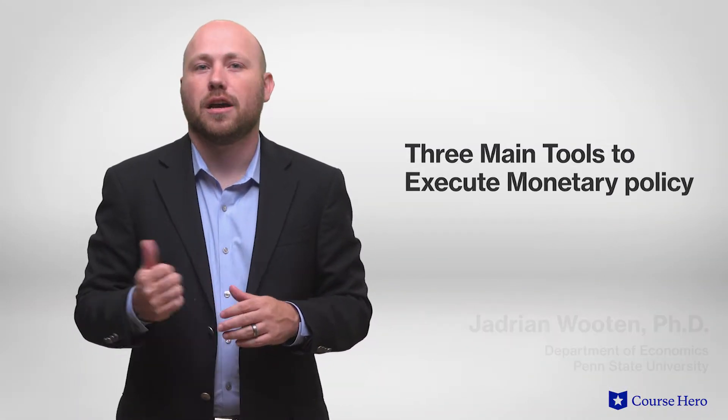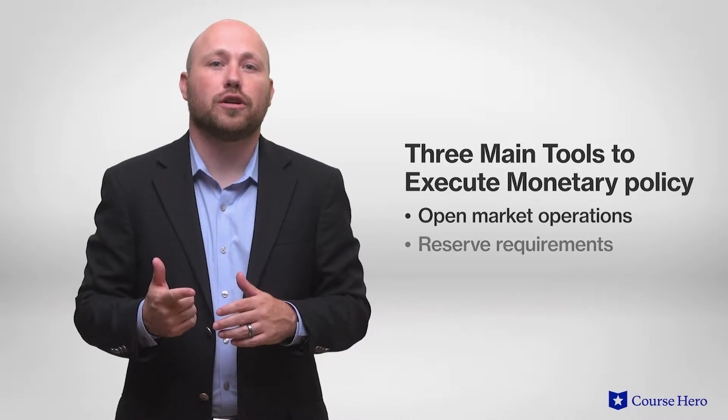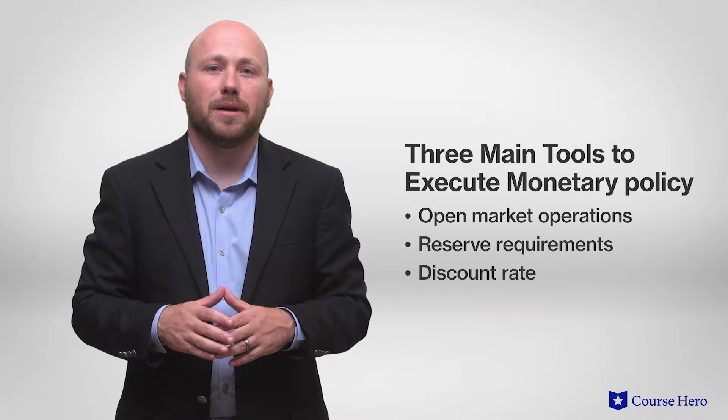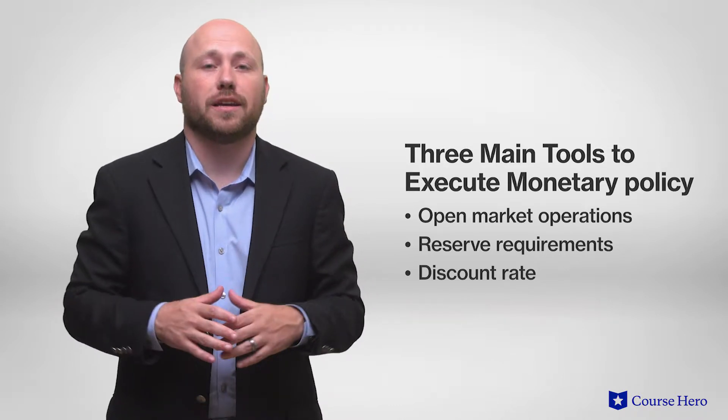The Federal Reserve has three main tools to execute monetary policy: open market operations, reserve requirements, and the discount rate. All three are used to affect the money supply, which in turn affects economic activity.